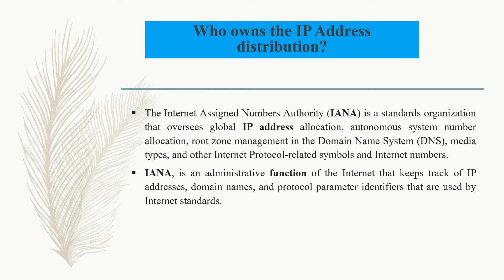Who owns IP address distribution? The Internet Assigned Numbers Authority, or IANA. It is a standards organization that oversees global IP address allocation, autonomous system number allocation, root zone management in the domain name system, media types, and other internet protocol related symbols and internet numbers. IANA is an administrative function of the internet that keeps track of IP addresses, domain names, and protocol parameter identifiers used by internet standards.